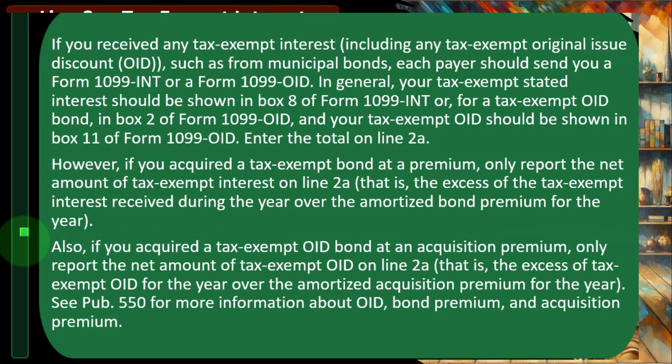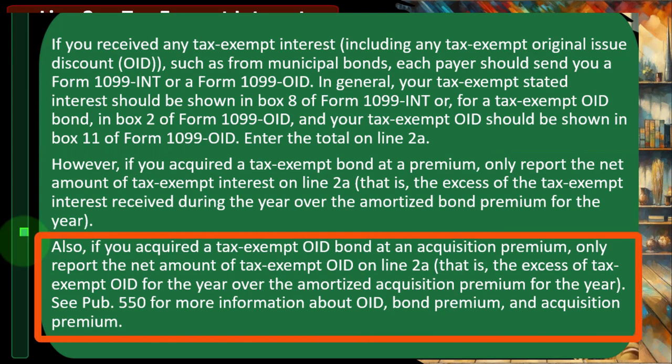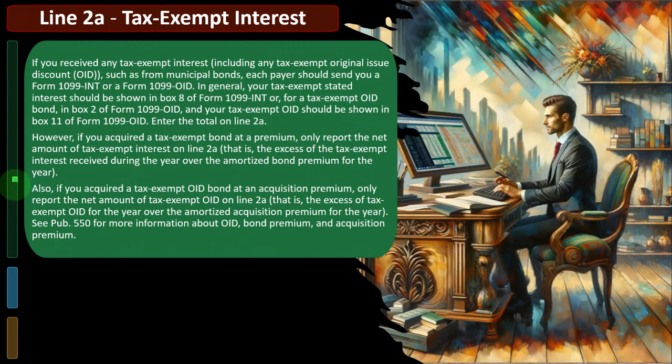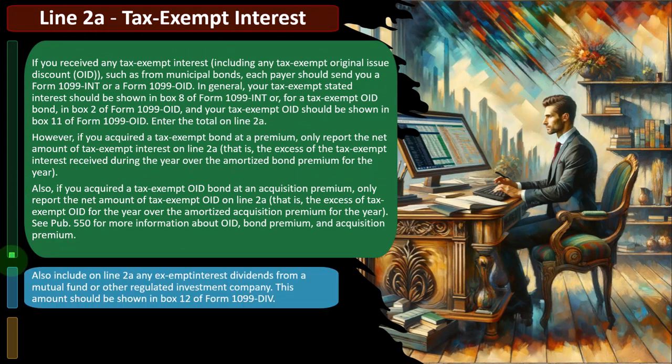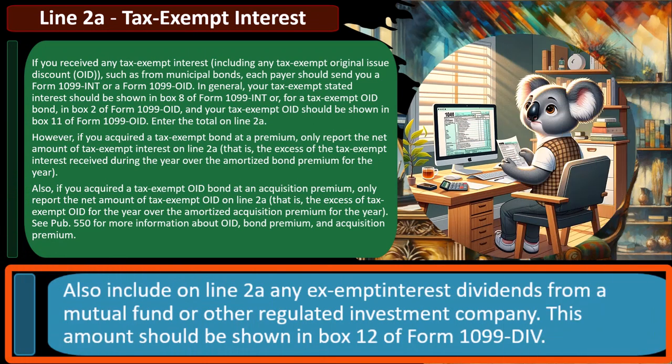It might be less likely that you're going to have the bond premium issue. But if you do, again, you can go to the IRS website and drill down on some further research from there. Also, if you acquired a tax-exempt OID bond at an acquisition premium, only report the net amount of tax-exempt OID on line 2A — that is, the excess of tax-exempt OID for the year over the amortized acquisition premium for the year. See Publication 550 for more information about OID, bond premium, and acquisition premium.